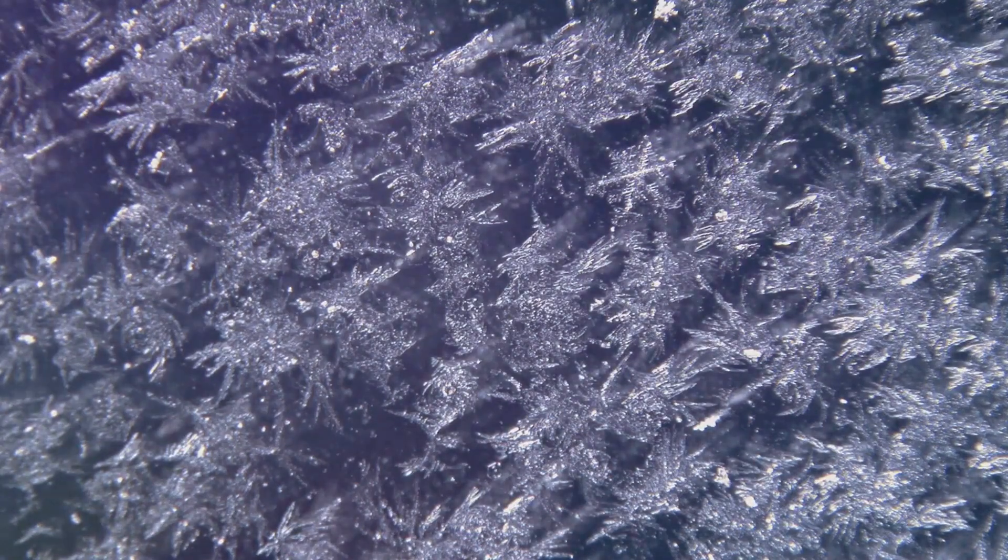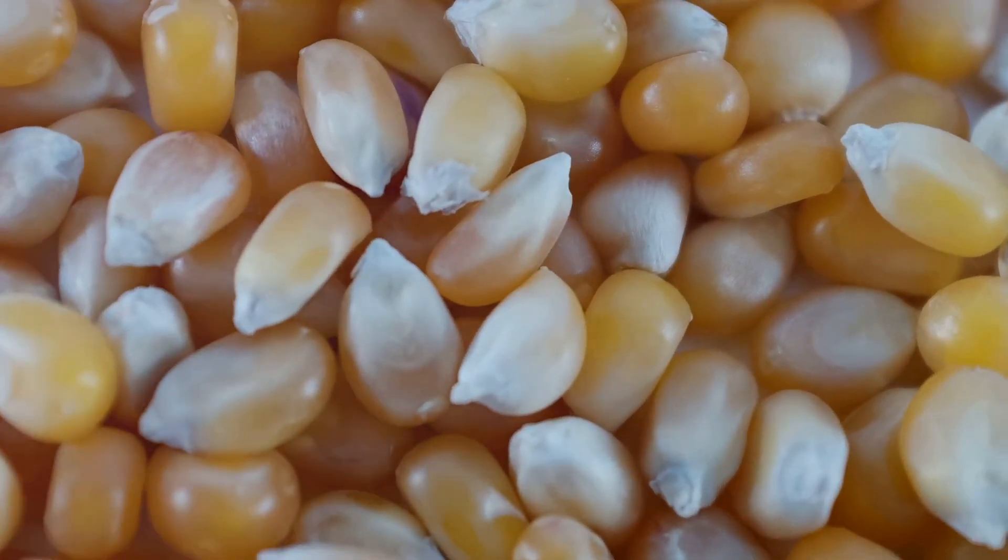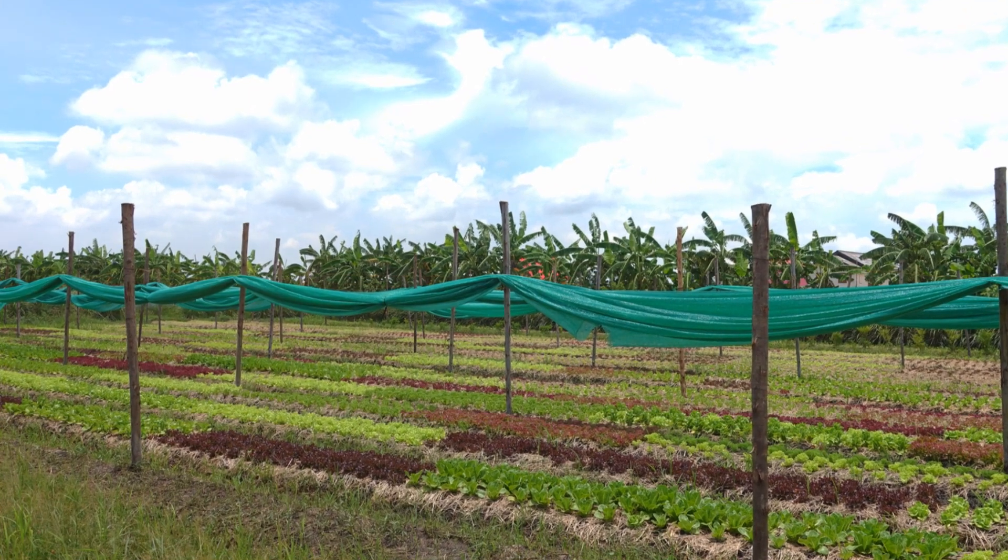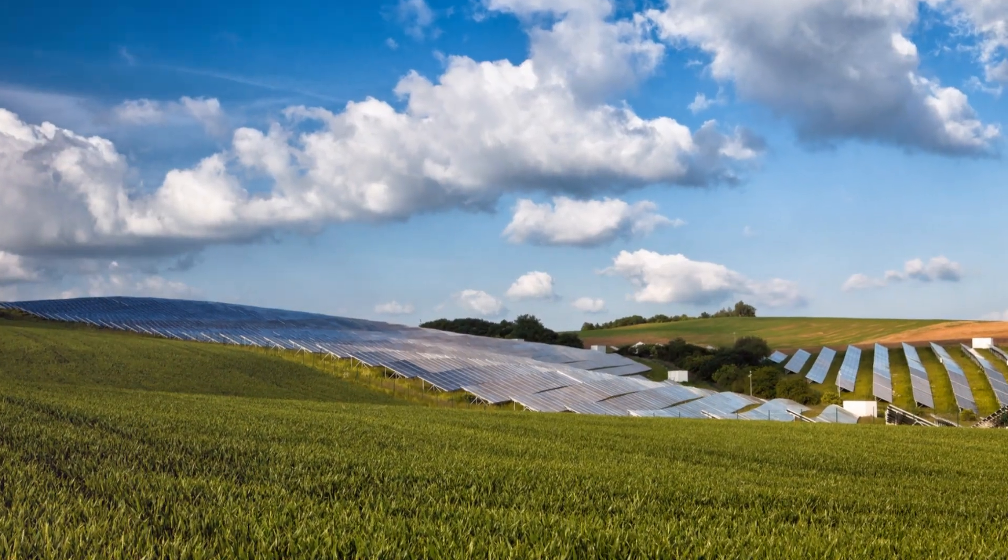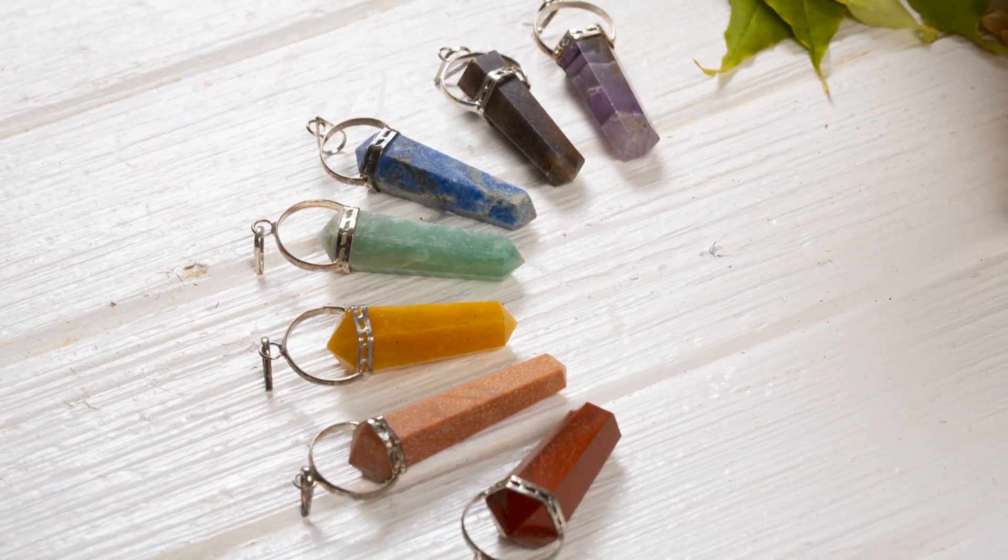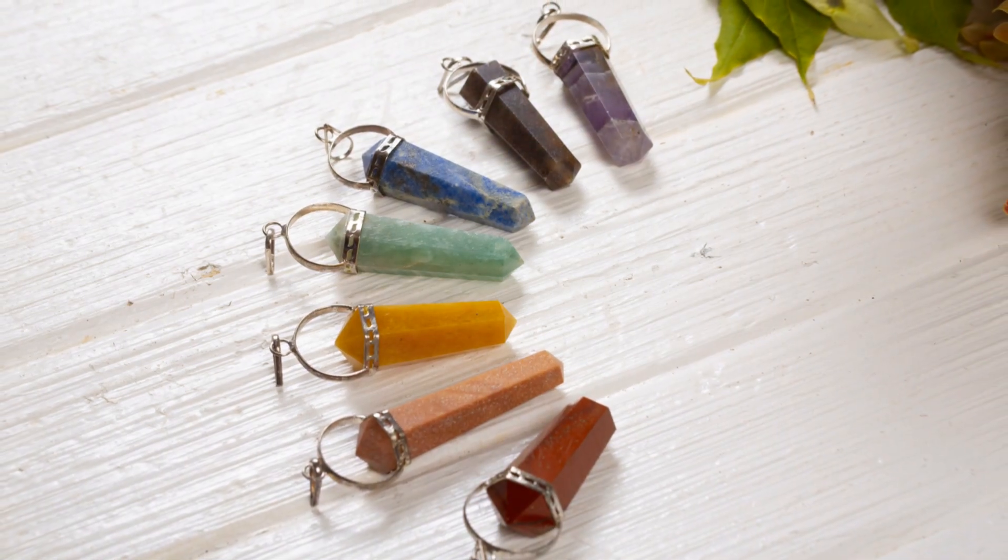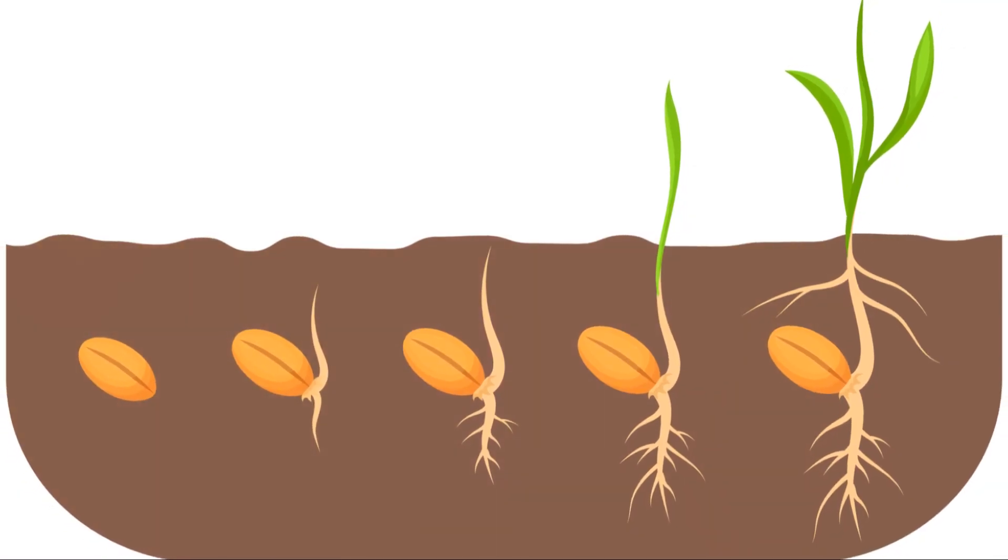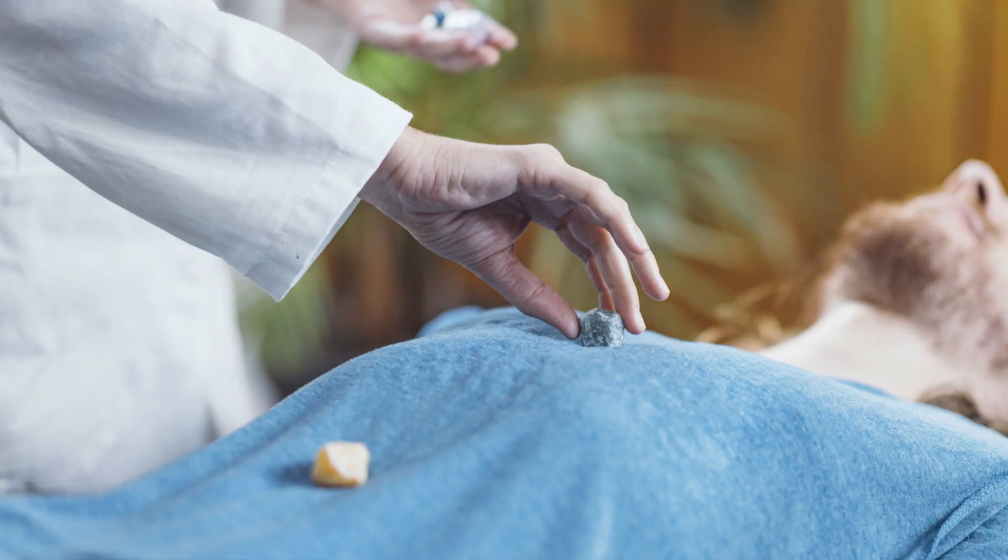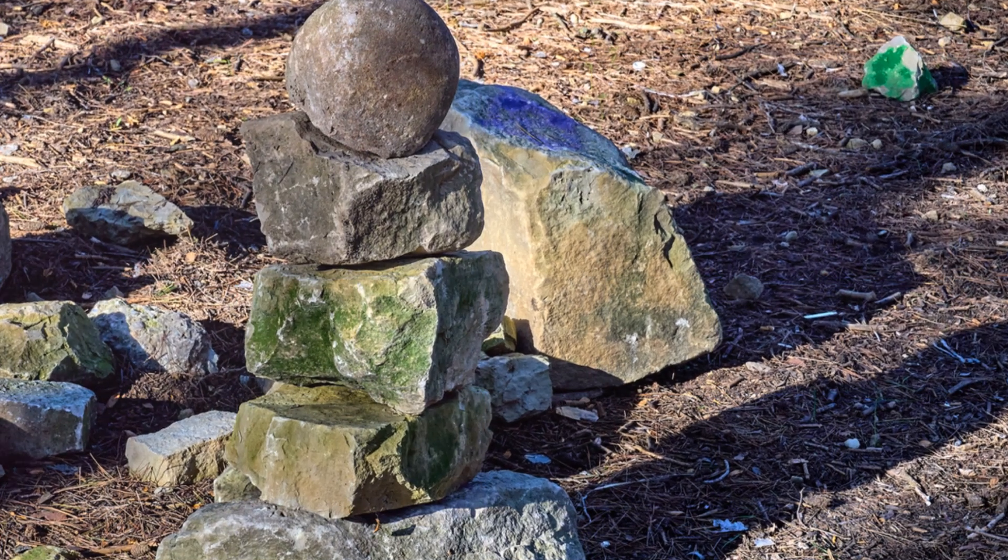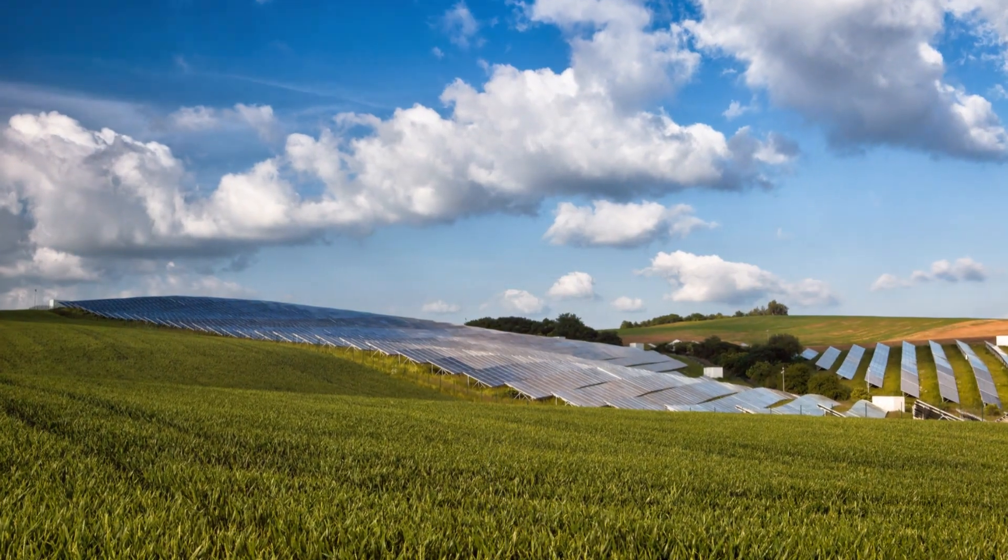But this isn't a one-way street. As the seed crystal is withdrawn, it's also being rotated. This rotation, like the seed's orientation and the controlled withdrawal, is a crucial factor in the growth of the crystal. It ensures that the silicon from the melt crystallizes uniformly onto the seed, maintaining the single crystalline structure while promoting smooth symmetrical growth. This process of crystal growth is a testament to the precision and finesse inherent in the Czochralski method. It's a delicate balance of temperature, timing and orientation, all working in harmony to create a perfect single crystal silicon.